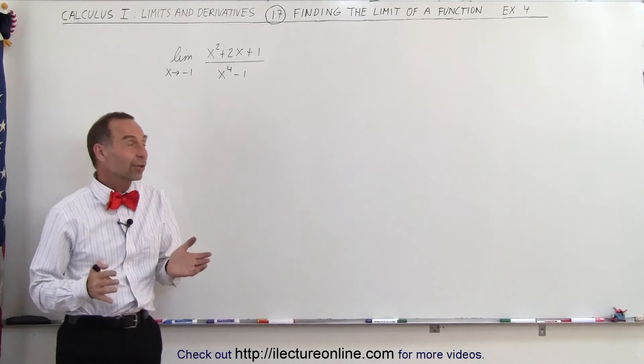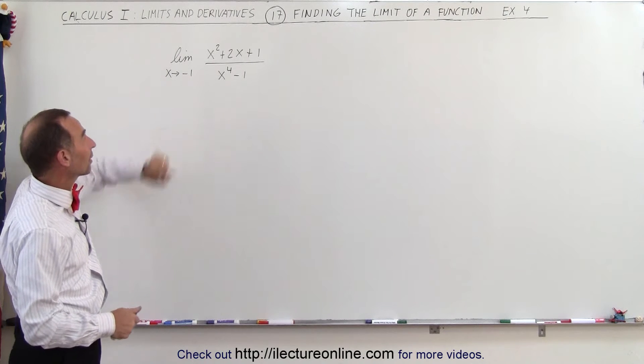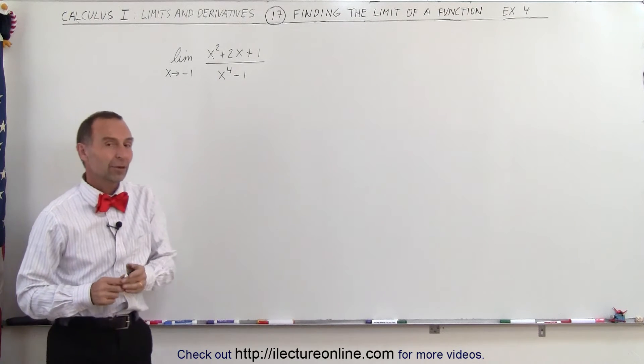Welcome to I lecture online. Now let's take a look at our next example. We're taking the limit as x approaches negative 1 of x squared plus 2x plus 1 divided by x to the 4th minus 1.